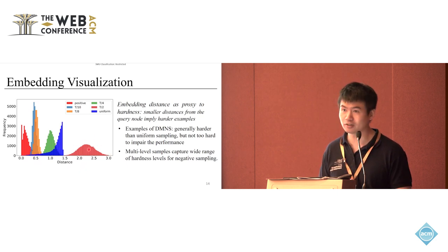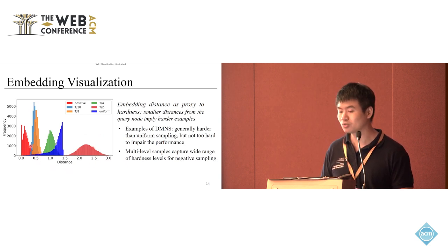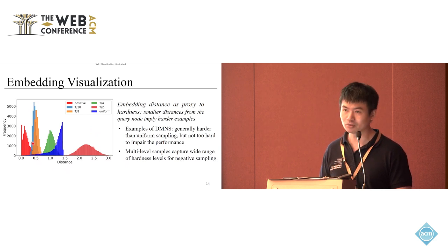On the other hand, this brown portion here is further away from the query node, so they are considered as easy examples. By doing this, we have a mixture of both easier and hard examples. So that's what we call multi-level negative sampling.